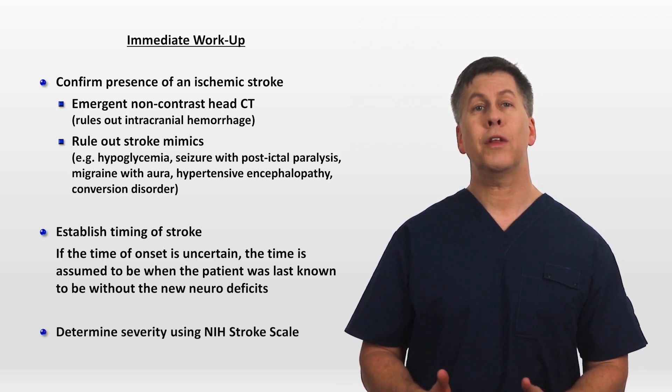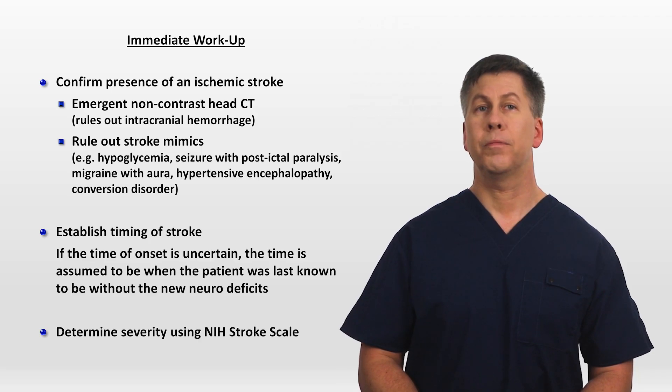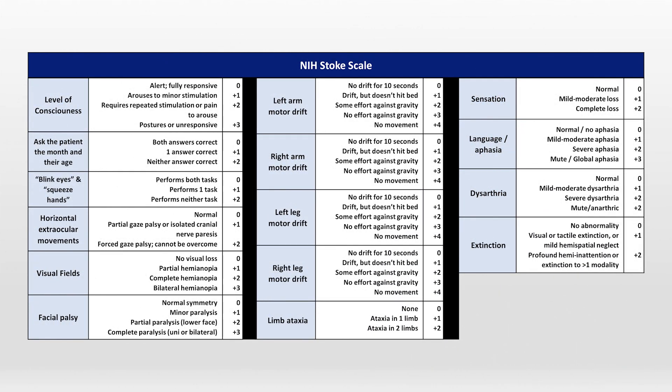And you'll need to determine the severity of the stroke using the NIH stroke scale. The basic idea is that the patient's neurologic function in various domains — such as cognition, language, strength, and coordination — are graded. The higher the score for a specific domain, the more severe the deficit. All the points are then added up, and the higher the overall score, the worse the prognosis.